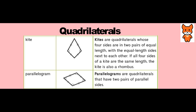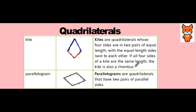Another interesting quadrilateral is the kite. A kite is a quadrilateral whose four sides are in two pairs of equal length. This side and this side are the same length — that's one pair. This side and this side are the same length — that's the second pair. The pairs of equal-length sides are next to each other. The red sides are the same length and they are next to each other. If all four sides of a kite are the same length, then the kite can also be called a rhombus.